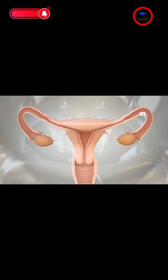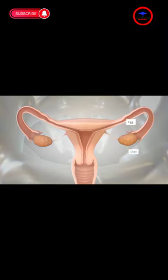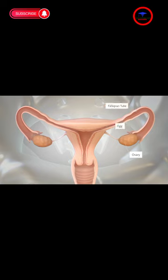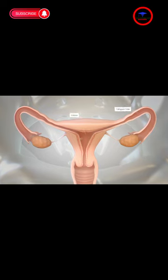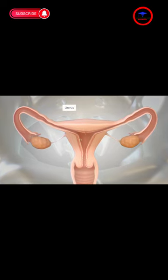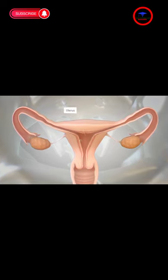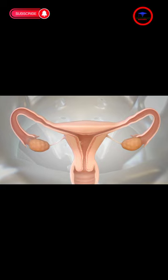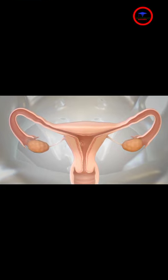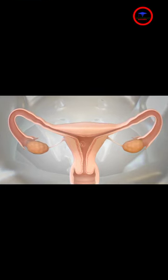Normally, after an egg is released from an ovary, it moves through the fallopian tube and into the uterus. After the egg is fertilized, it implants into the lining of the uterus and starts to grow.